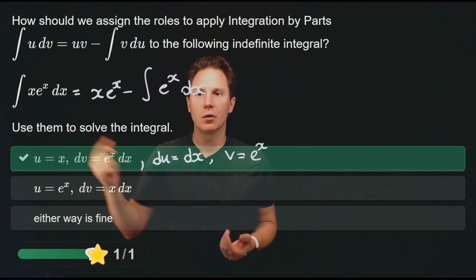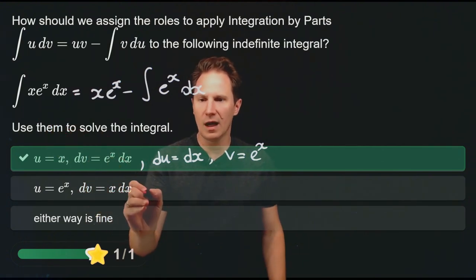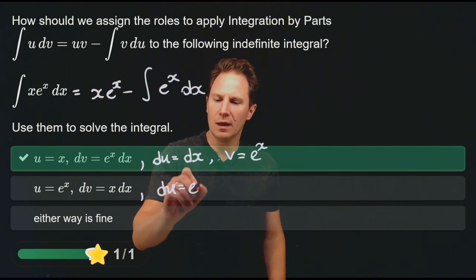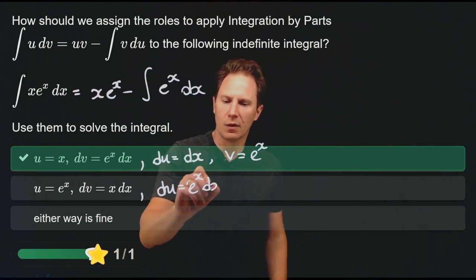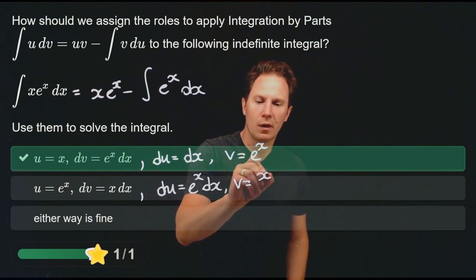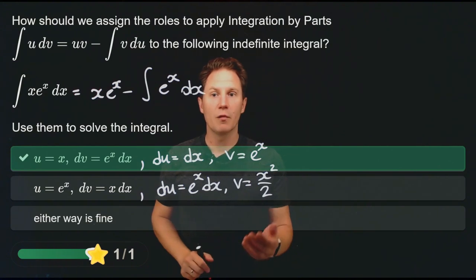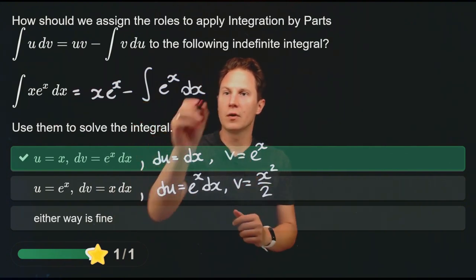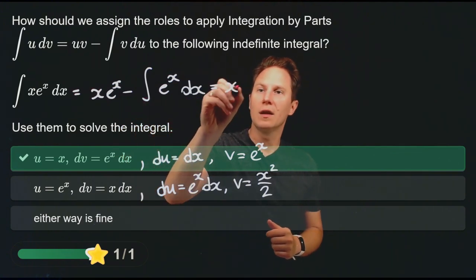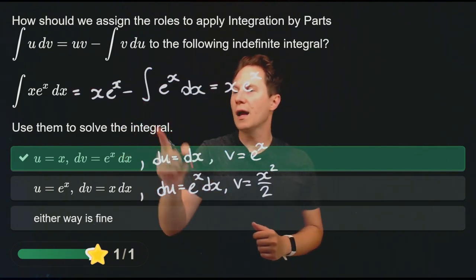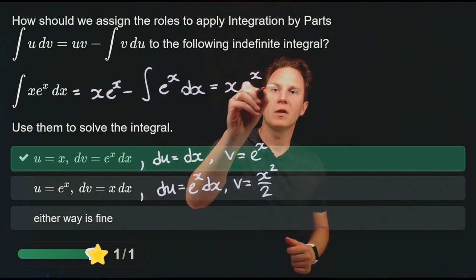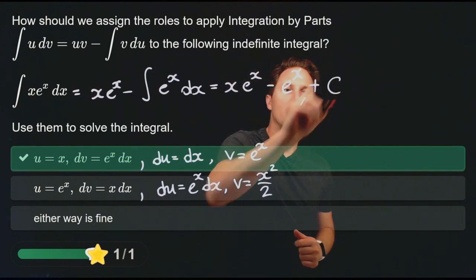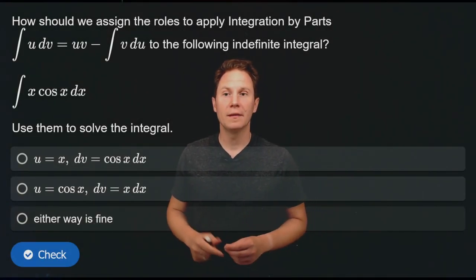If we had chosen u equals eˣ instead, then du would be eˣ dx and v would be x²/2, which would make the resulting integral more complicated. So we stick with the first choice. Continuing the evaluation: x·eˣ minus the integral of eˣ is just x·eˣ minus eˣ, plus any constant c.